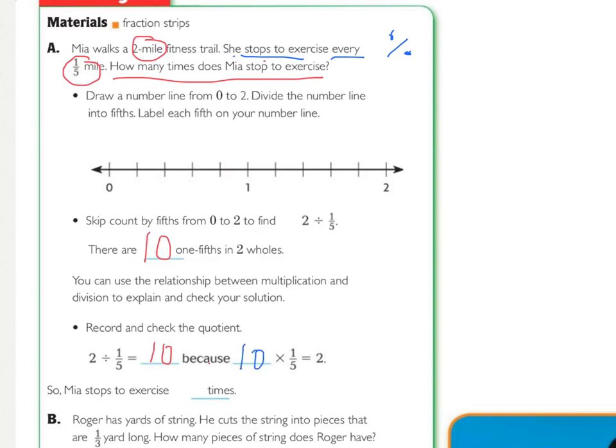And we know this because 10 times 1 fifth equals 2. Because remember we have to go, so 10 times 1 equals 10. And then our denominator stays the same, so that'd be 10 fifths. So 10 divided by 5 is 2, so that's 2 and they check each other. So that means that Mia stopped 10 times.